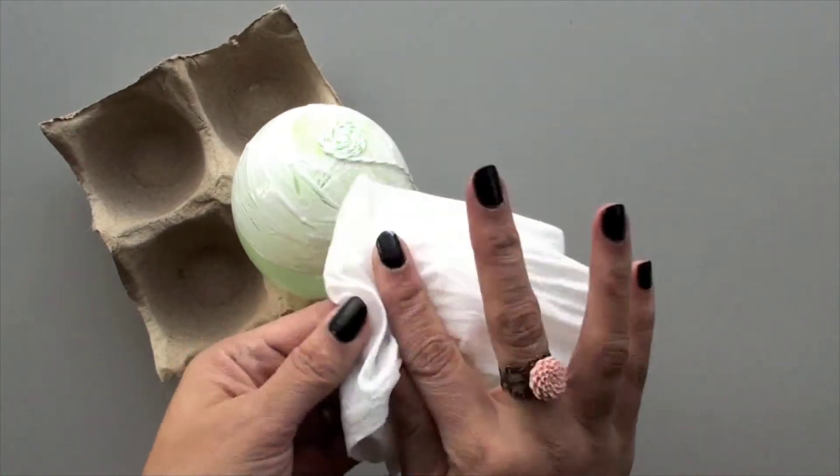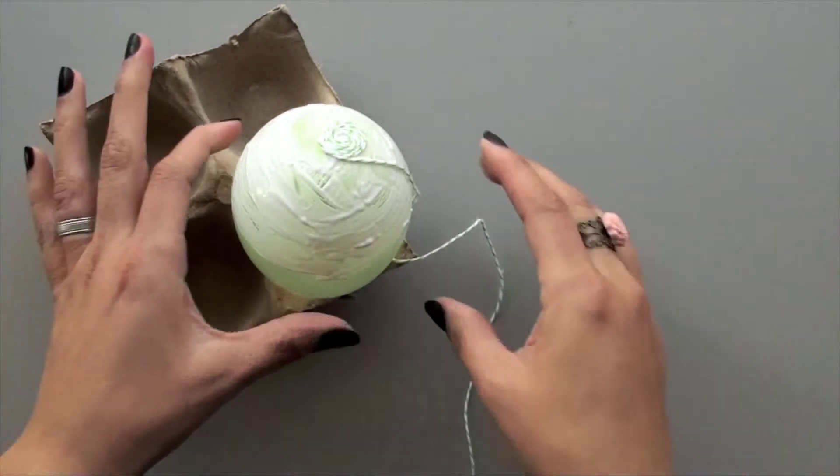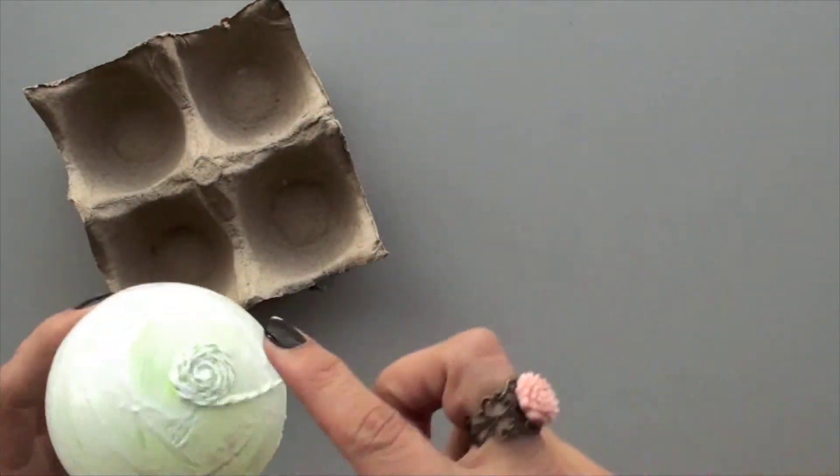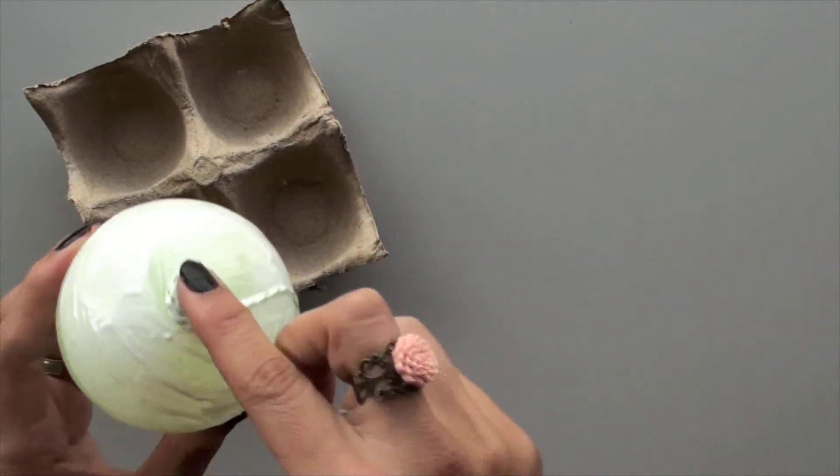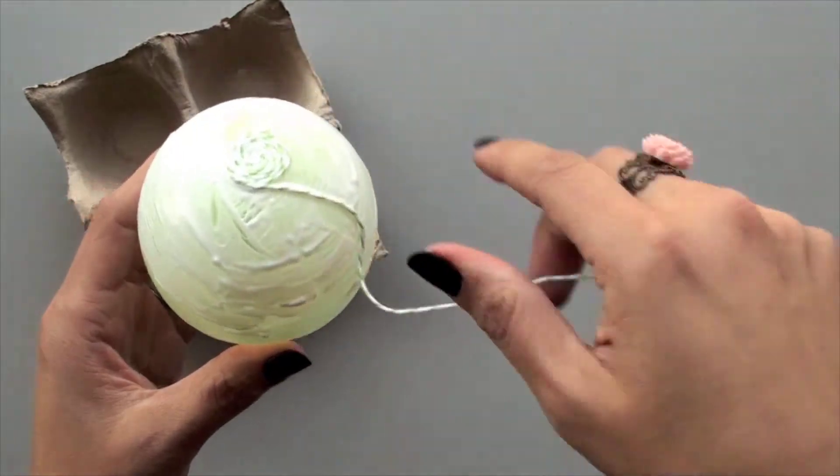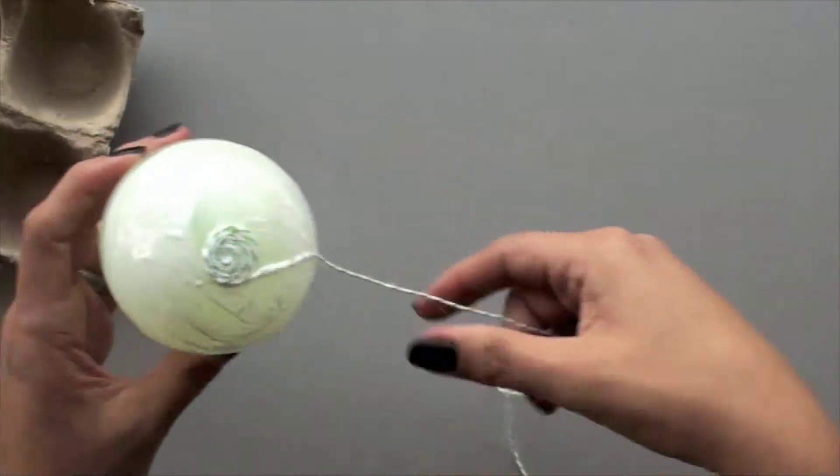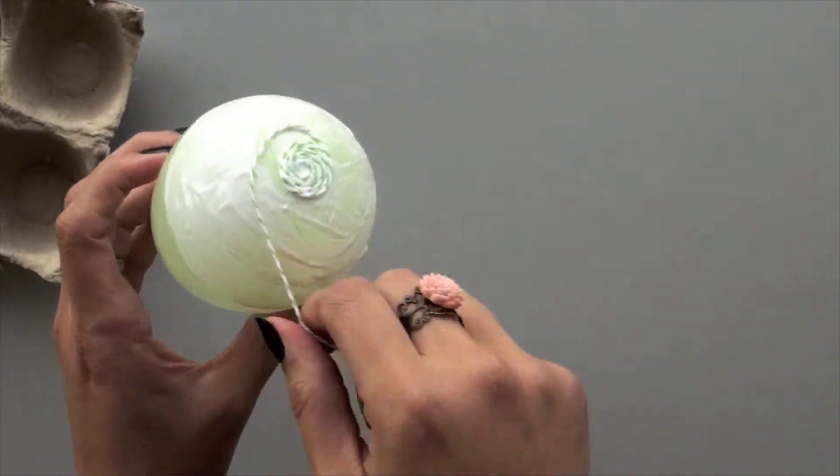So when you need to wipe your hands, as I'm doing here with wipes, just have some handy or a wet towel so that you can continue on the process. And see, because it's wet, I'm able to manipulate and bring it back to the center, and then what I'm going to do is just keep going around.